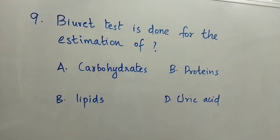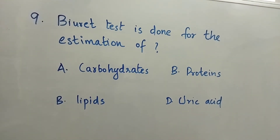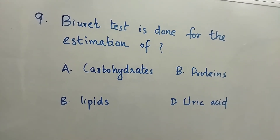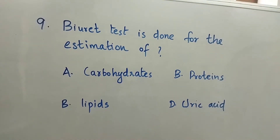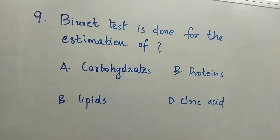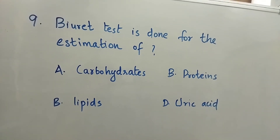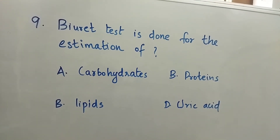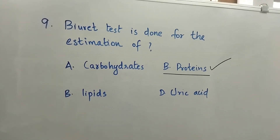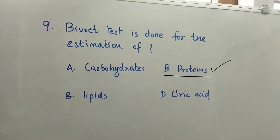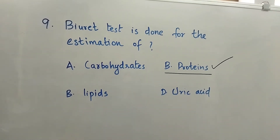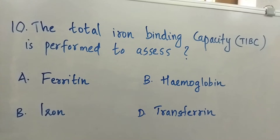Question number 9: Biuret test is done for the estimation of — Option A: Carbohydrates. Option B: Proteins. Option C: Lipids. Option D: Uric acid. The right answer is Option B, Proteins. Biuret test is done for the estimation of proteins.